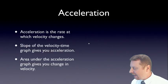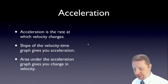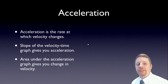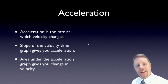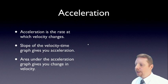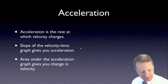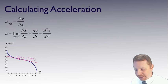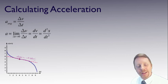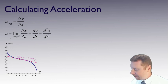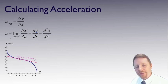Let's look at acceleration. Acceleration is the rate at which velocity changes. The slope of the velocity-time graph gives you acceleration, just like the slope of the position-time graph gave you velocity. And the area under the acceleration-time graph gives you the change in velocity — a symmetry of kinematic quantities. Average acceleration is just the change in velocity divided by time. Instantaneous acceleration is the limit as delta t approaches 0 of delta v over delta t, which is the derivative of velocity with respect to time, or the second derivative of x with respect to time.